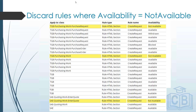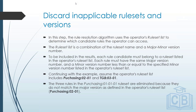Step three: discard inapplicable rule sets and versions. Whether a rule set is inapplicable depends on the operator's rule set list. Each rule candidate is compared against the operator's rule set list — if it falls within that list it is kept, otherwise it is discarded. The logic is: to be included, each rule candidate must belong to a rule set listed on the operator's rule set list.